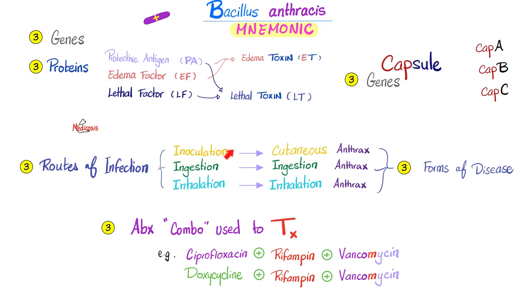There are three routes of infection: by inoculation, ingestion, or inhalation, leading to cutaneous, ingestion, and inhalation anthrax, respectively.